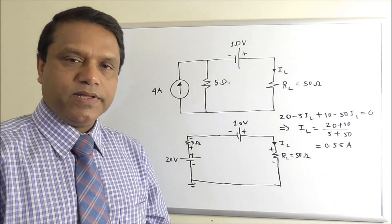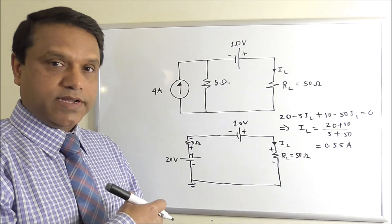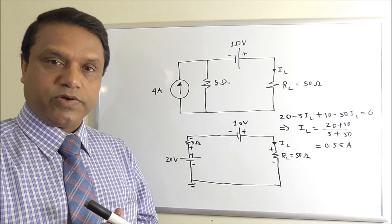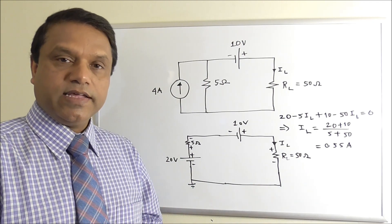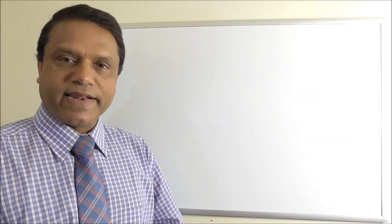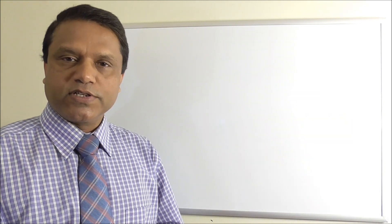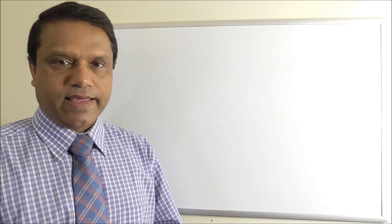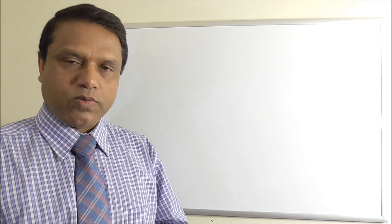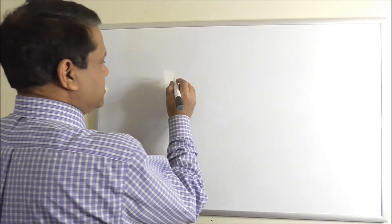So you have solved this seemingly difficult circuit easily by converting the current source into a voltage source — this technique can be very useful. Sometimes we have to go the other way around: converting a voltage source into a current source can help solve the circuit. Now we will look at an example where converting a voltage source to a current source makes it easier.